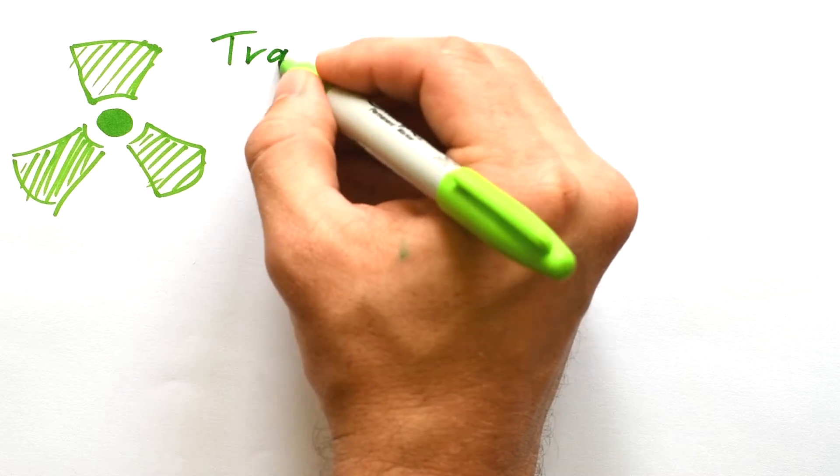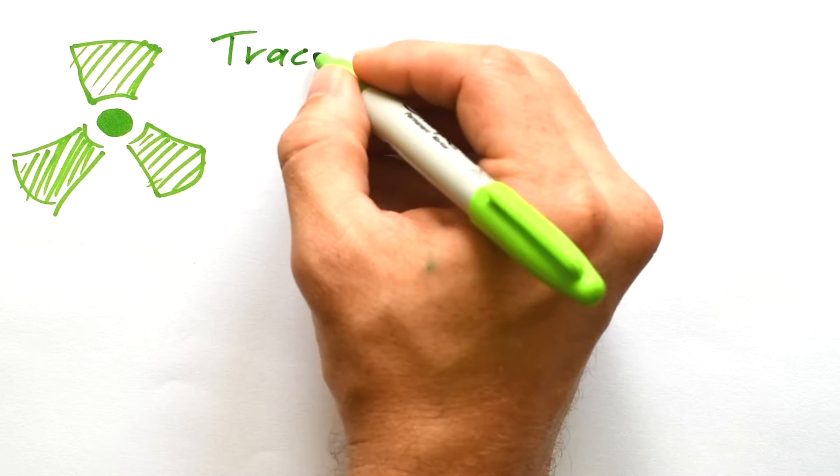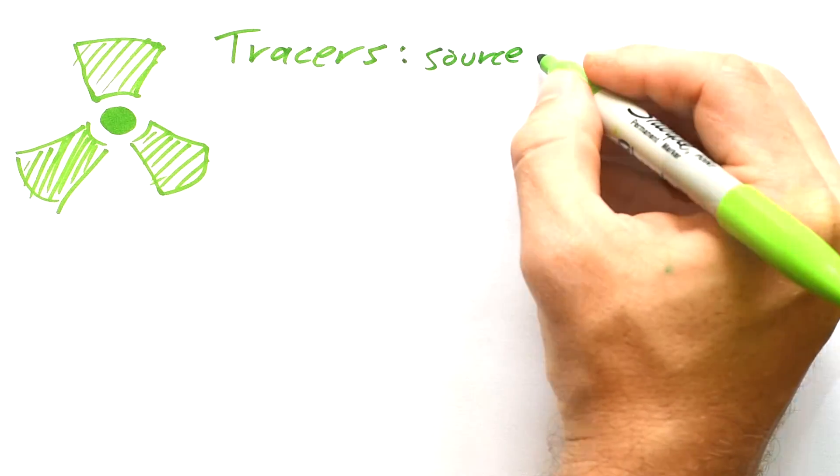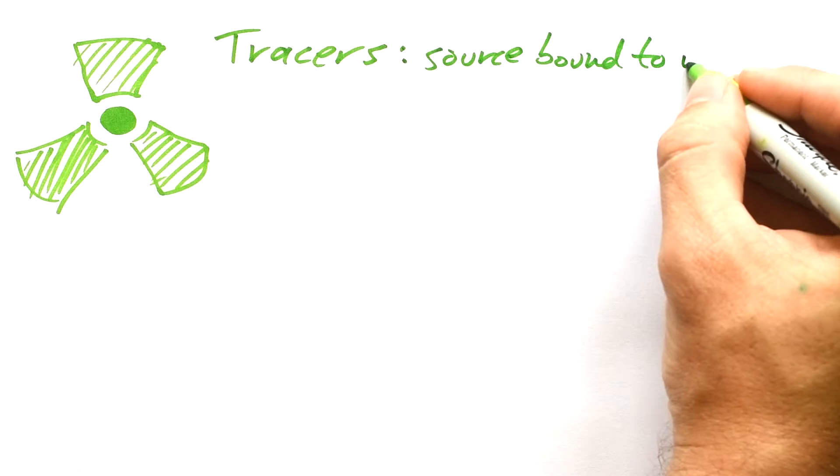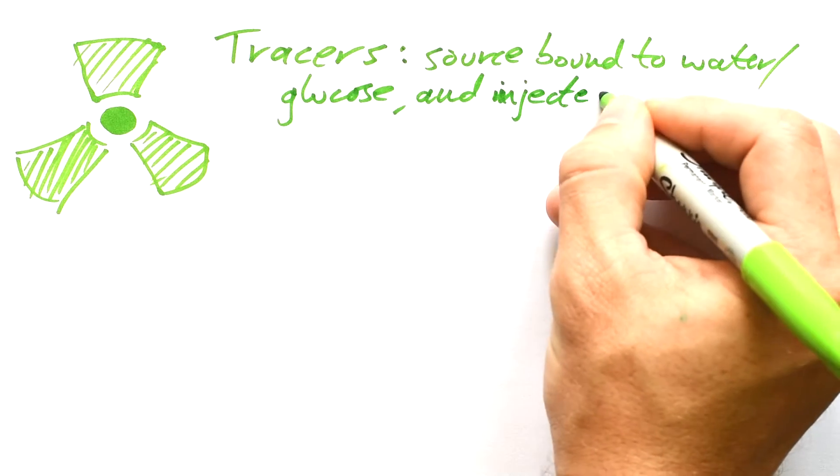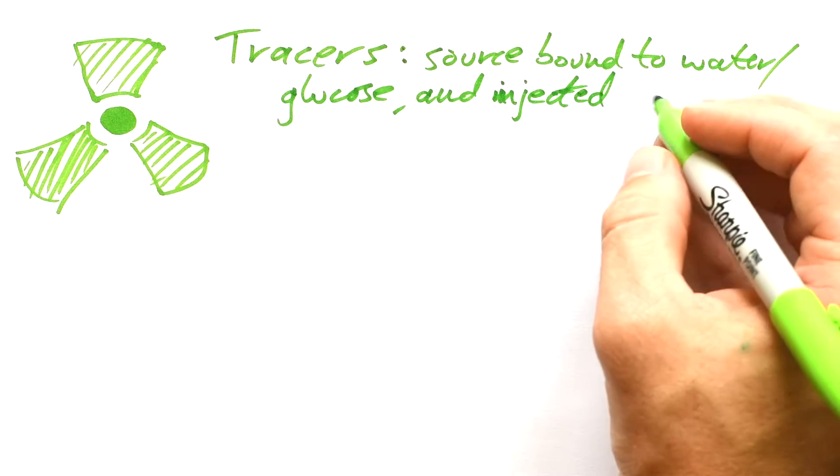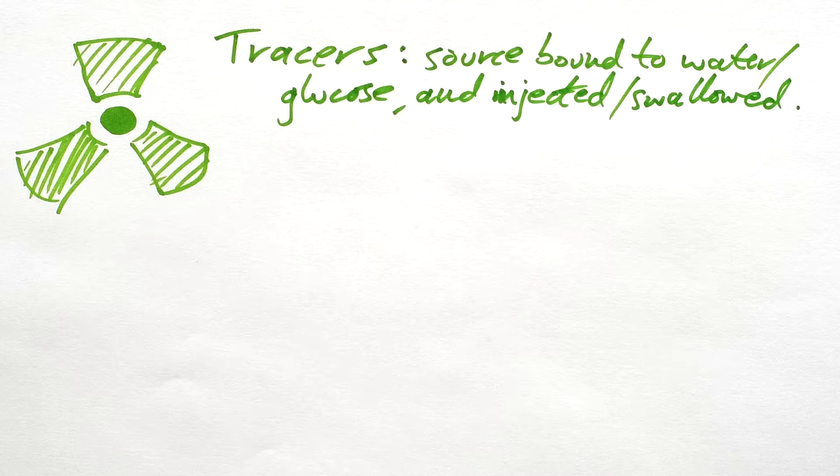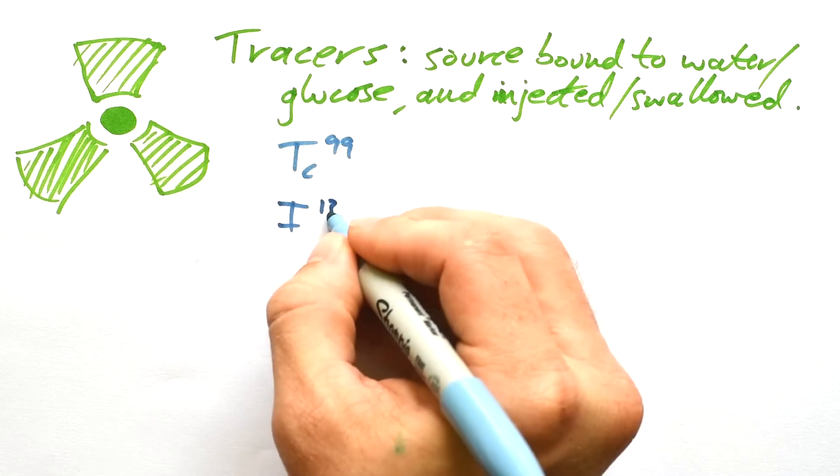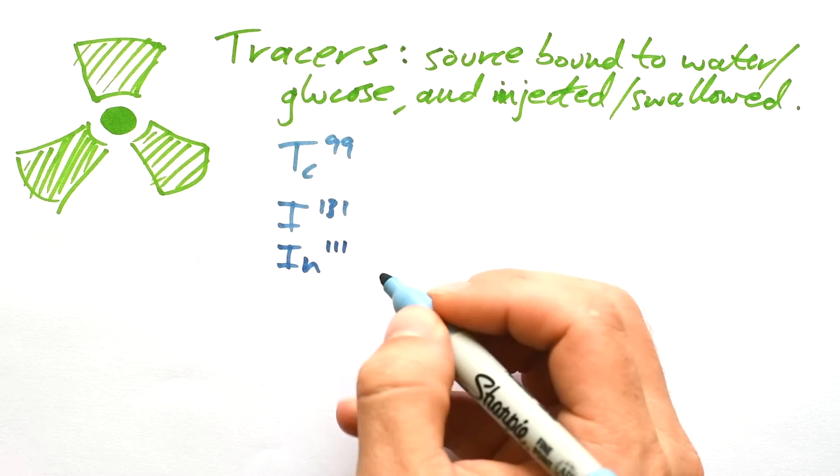The first thing that we can use radiation for in medicine is as a tracer. We have a source that is bound to either water or glucose. It's either injected into the bloodstream or it's swallowed. It depends on what you're trying to see. There's a few main sources that we use: Technetium-99 in a metastable state, Iodine-131, and Indium-111.